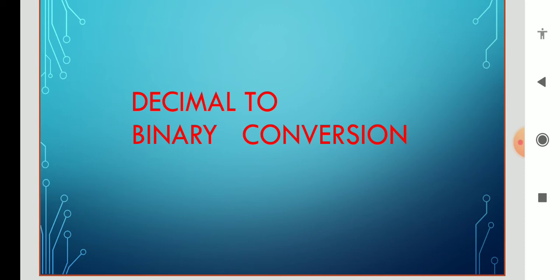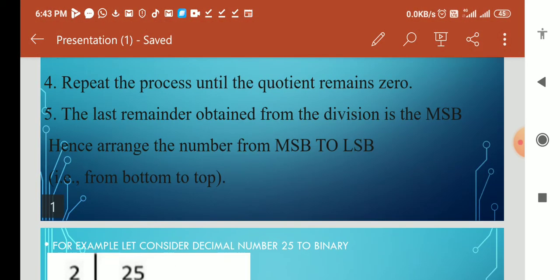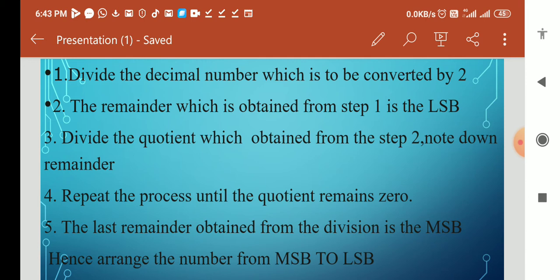Let's see how to convert a number into binary form. We need to follow some procedure or steps. First, divide the decimal number which is to be converted by two.